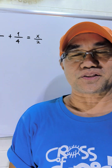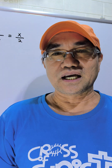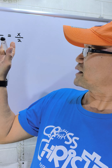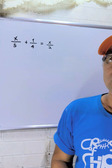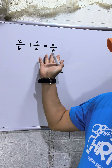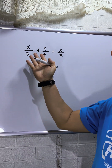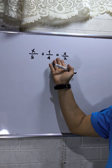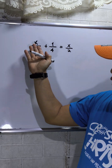Hello to everyone, especially to students who want to learn about algebra. This topic is rational equations. When we say rational equation, there must be a fraction and there must be a symbol of equality.